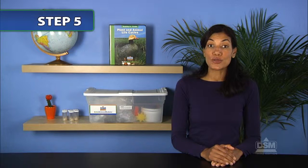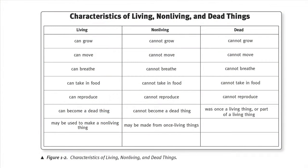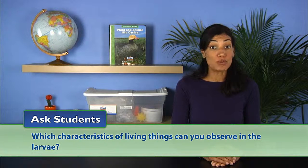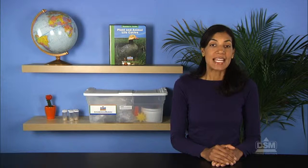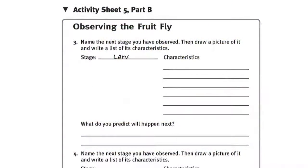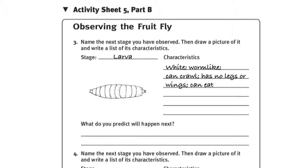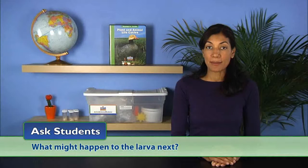Next, refer students to the chart Characteristics of Living, Nonliving, and Dead Things, and ask, which characteristics of living things can you observe in the larvae? Students should have observed that the larvae can move, eat, and grow. Then distribute to each student a copy of Activity Sheet 5, Part B, and to each team a copy of the fruit fly larva picture. Instruct students to use the pictures, as well as their own observations, to complete Question 3 of the Activity Sheet. Ask students what might happen to the larvae next.